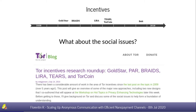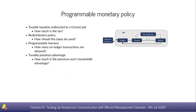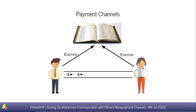We consider those problems in our design by giving a monetary payment system that is as flexible as possible, but which can be constrained by the authority through a kind of programmable monetary policy. We have a central pot that collects taxes on direct payments made in the network. The incentive mechanism can then be tuned by setting the tax amount, designing a distribution policy of those taxes, constraining the ledger, and tuning the premium bandwidth advantage.